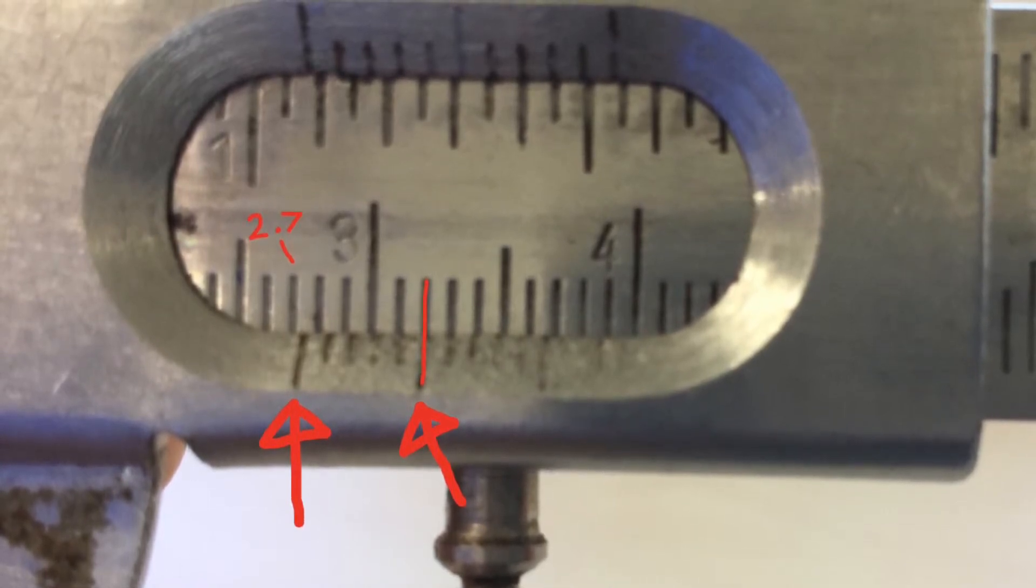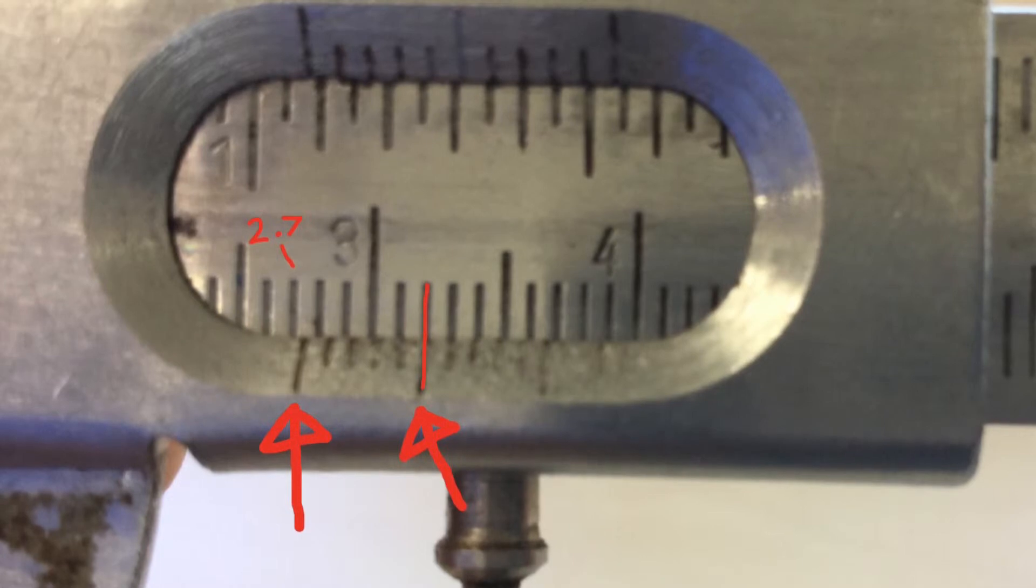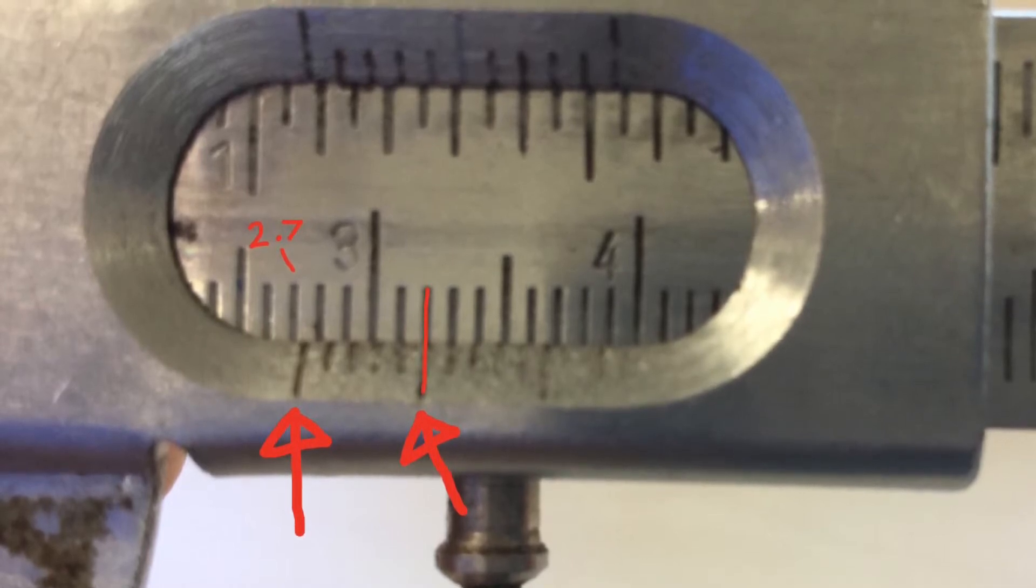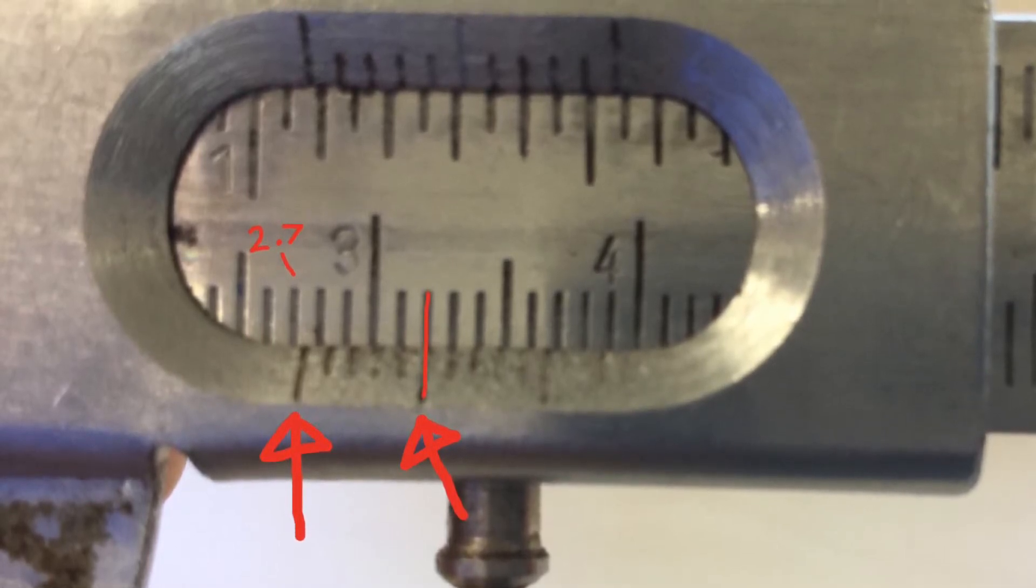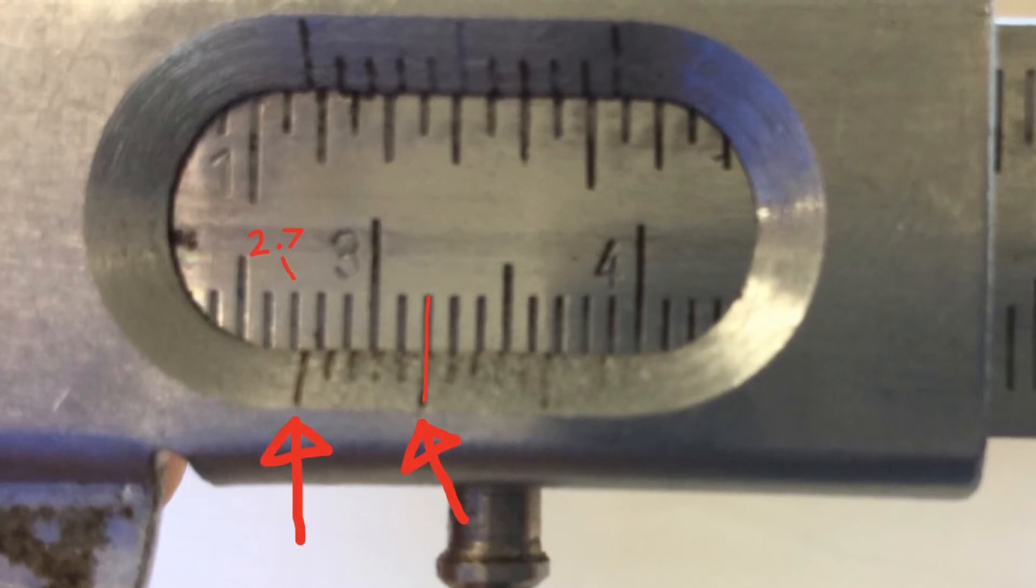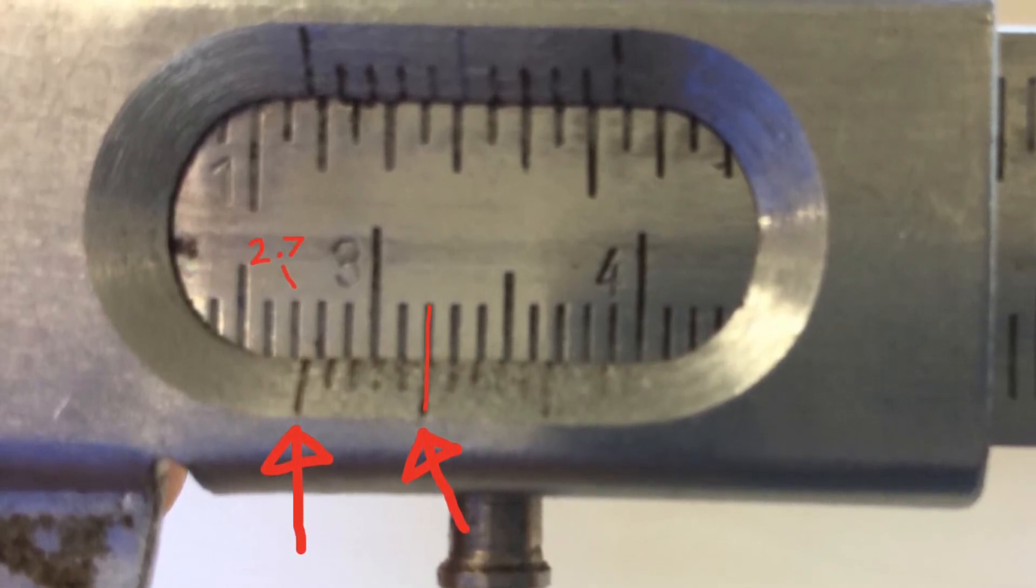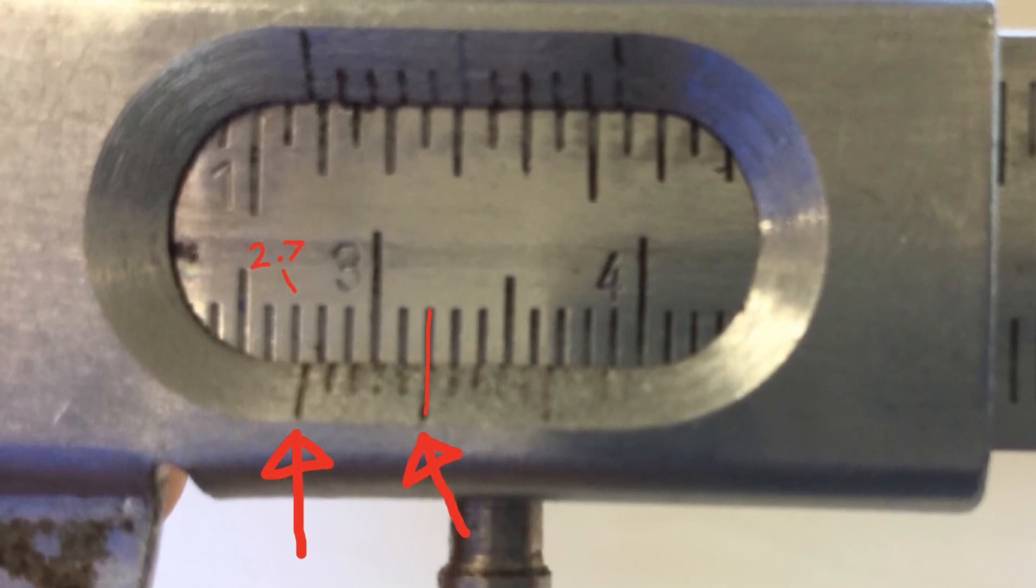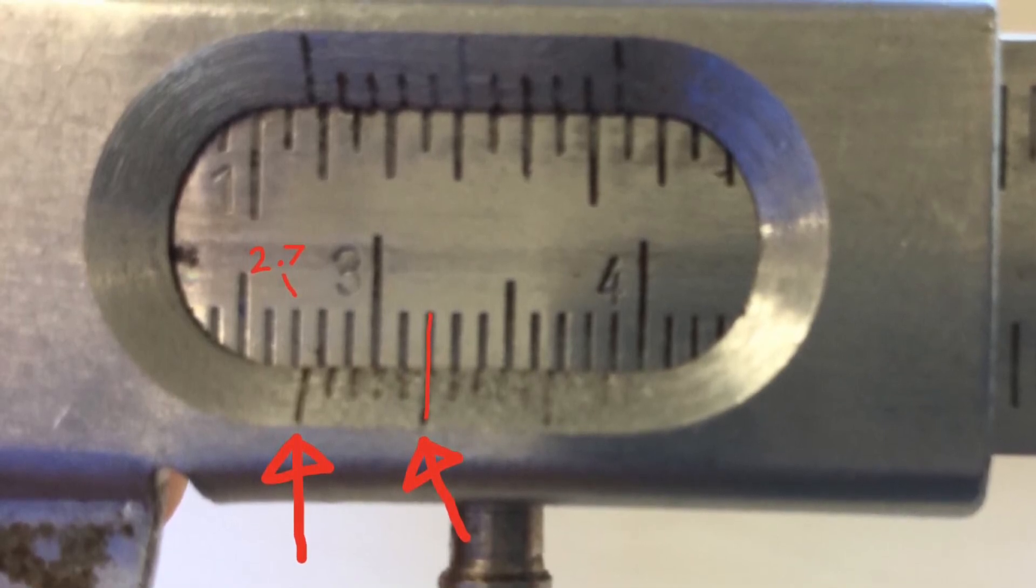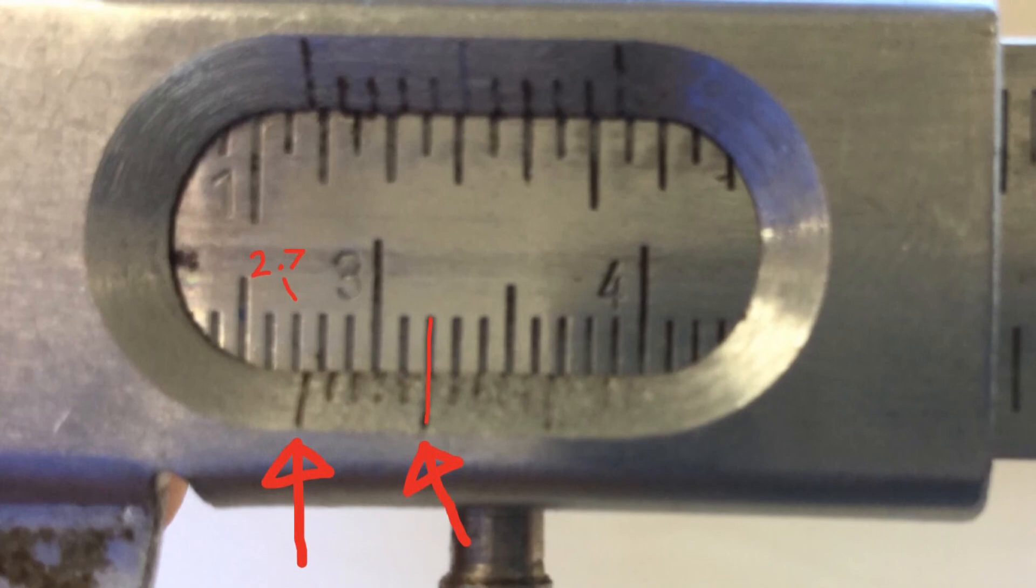You go along the line and look at which one lines up perfectly. In this picture, that line is the one that we have drawn in red. This is the fifth line along from the first arrow, which means that our reading is 2.75. That's how to read the measurement of a vernier caliper.